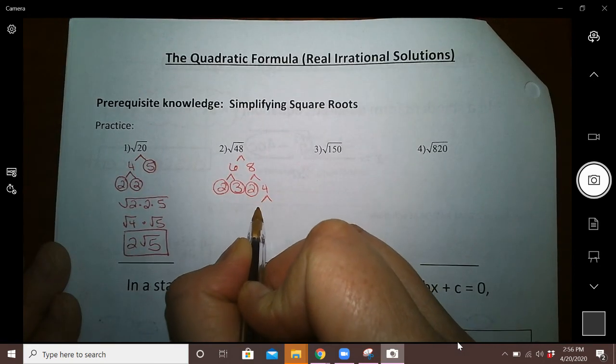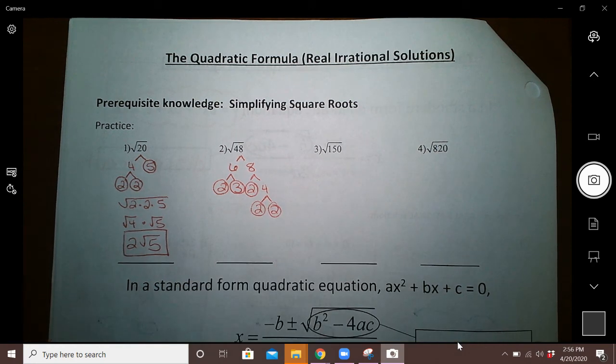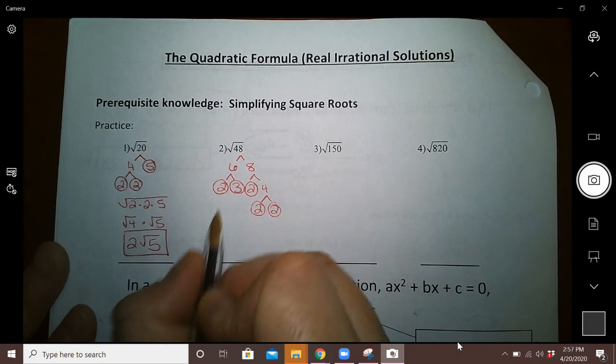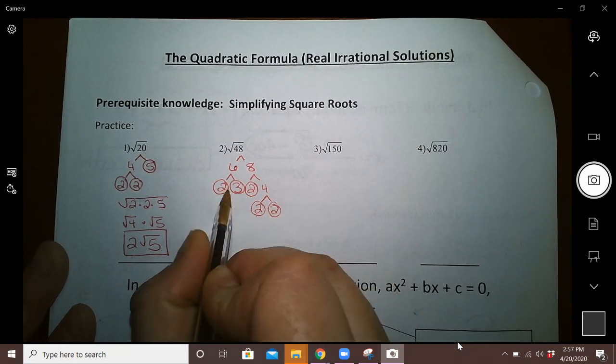And 4 is 2 times 2. So no matter how you break down 48, you're going to get 1, 2, 3, 4 twos and a 3.